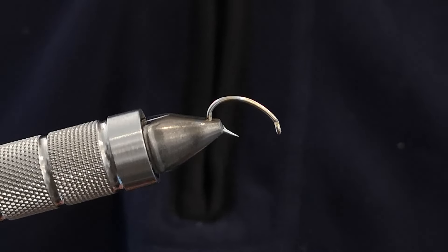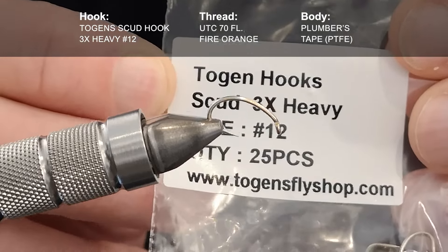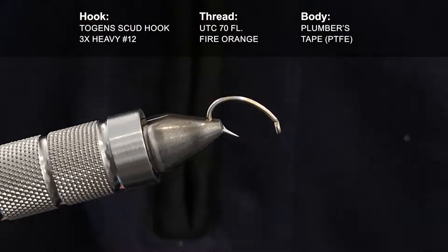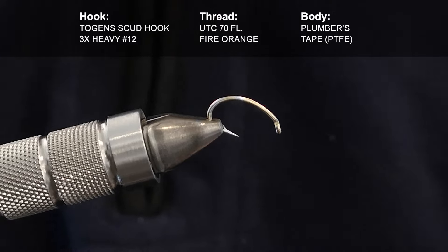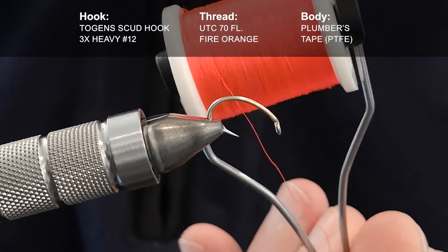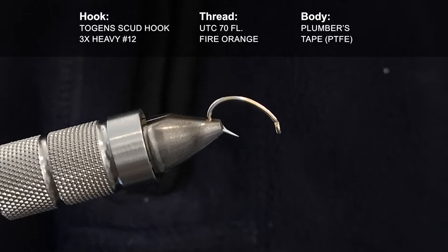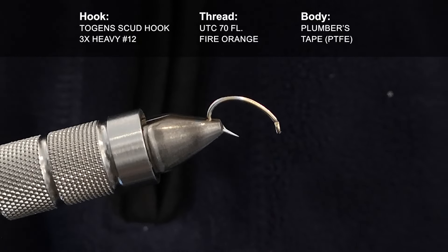So in the vice at a slightly jaunty angle you'll notice I have a Togen's 3x strong scud hook in size 12. Thread is going to be UTC fluorescent fire orange but it can be any colour you want. This is for the thorax of the fly.